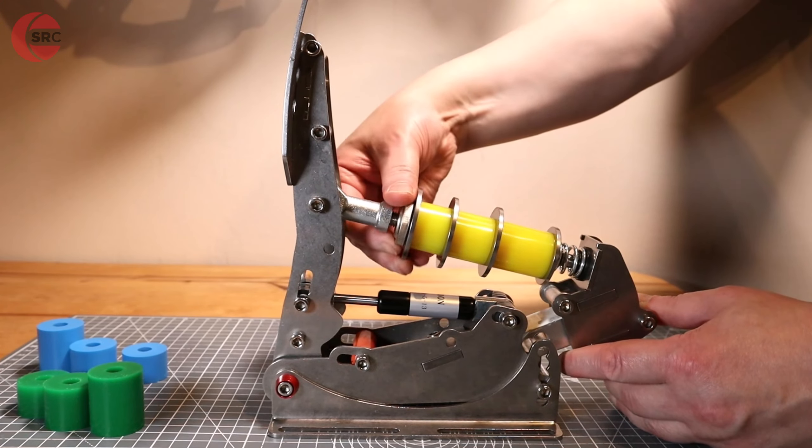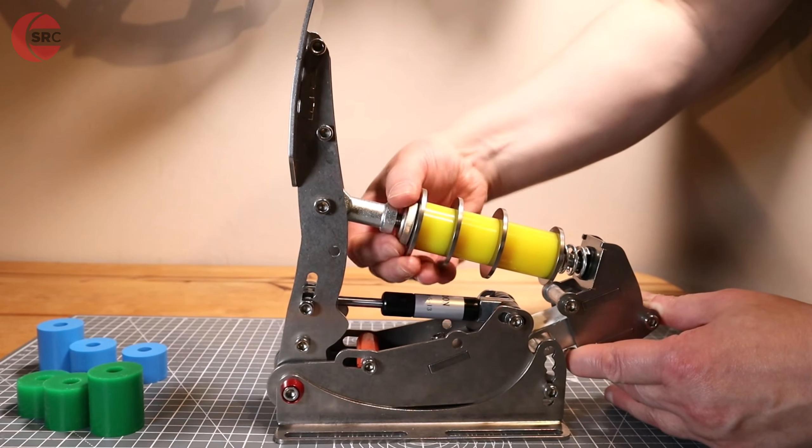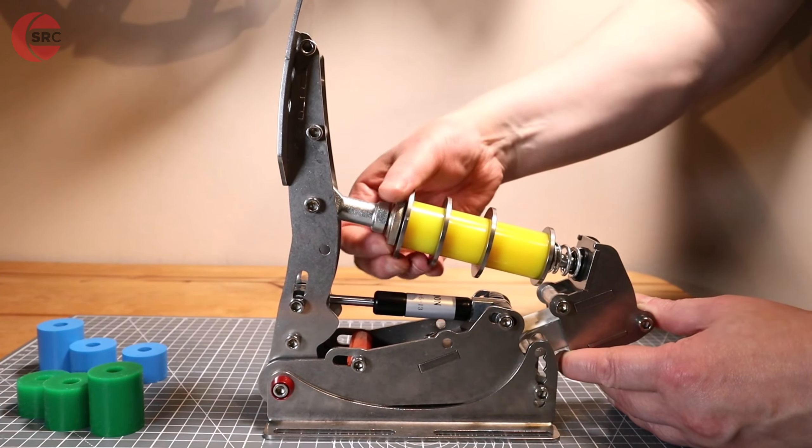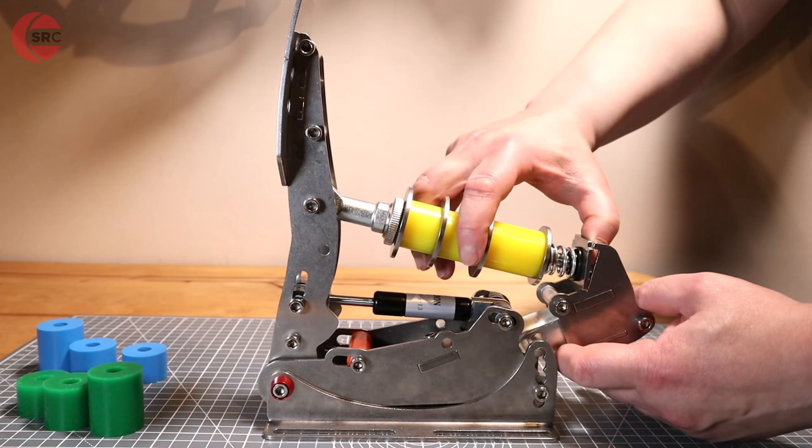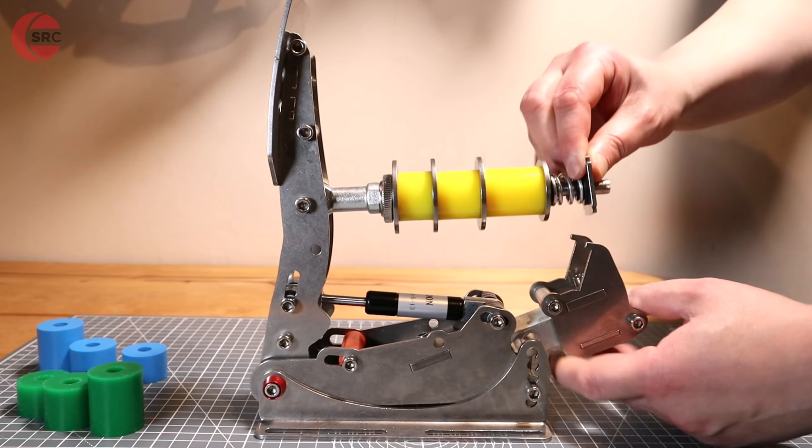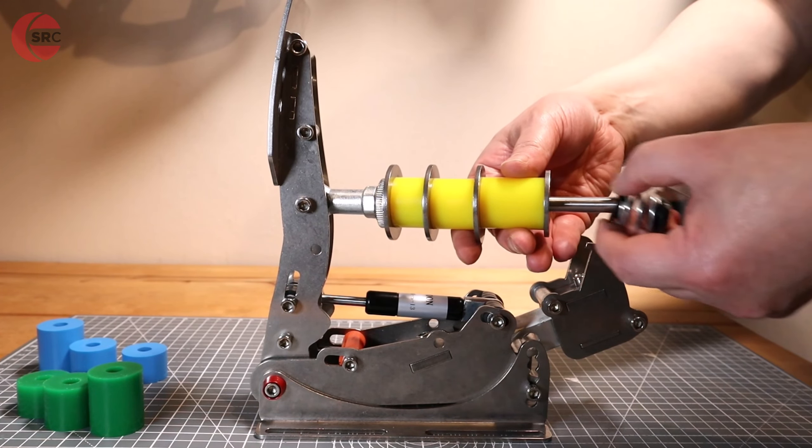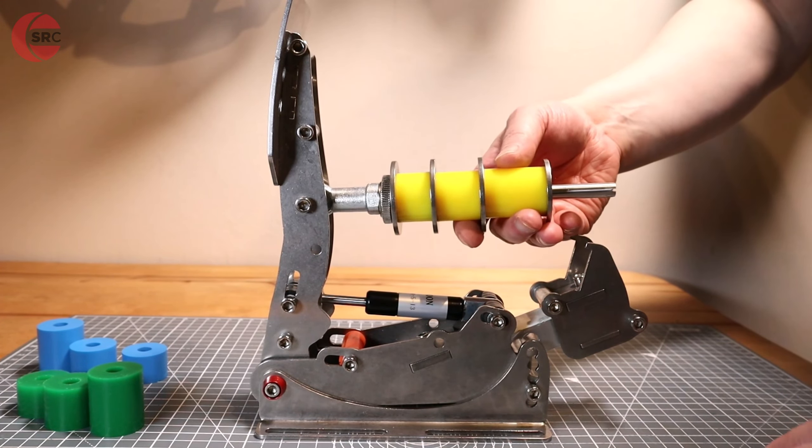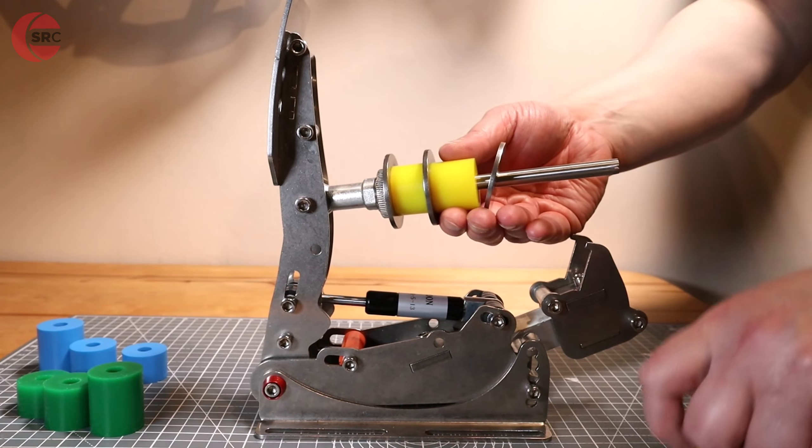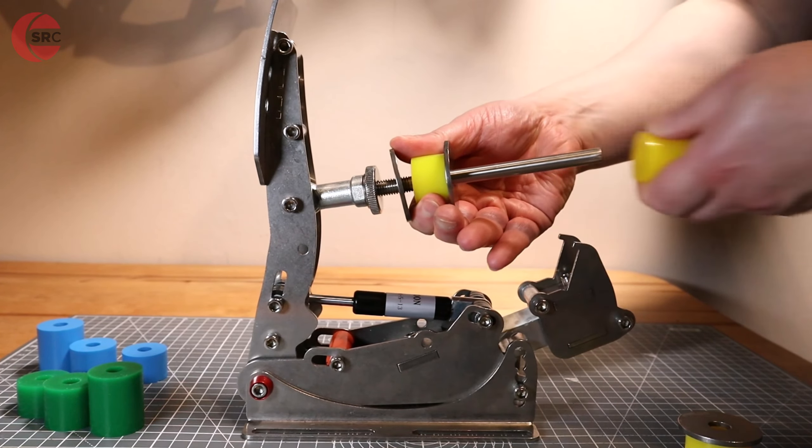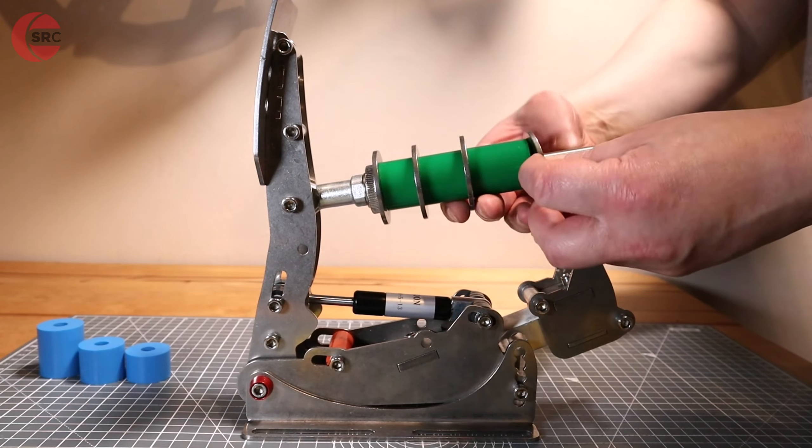The brake includes three sets of elastomers. The yellows are 60 shore, the greens are 80 and finally 90 for the blue set. The higher the number, the firmer they are. Swapping them out is performed by loosening the collar and releasing the plate to access the rod. You have the option to either change out all of one color for another or mixing them up.